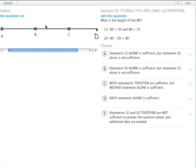We need the length of line BD. So BD is this distance here. Let's see what we get.